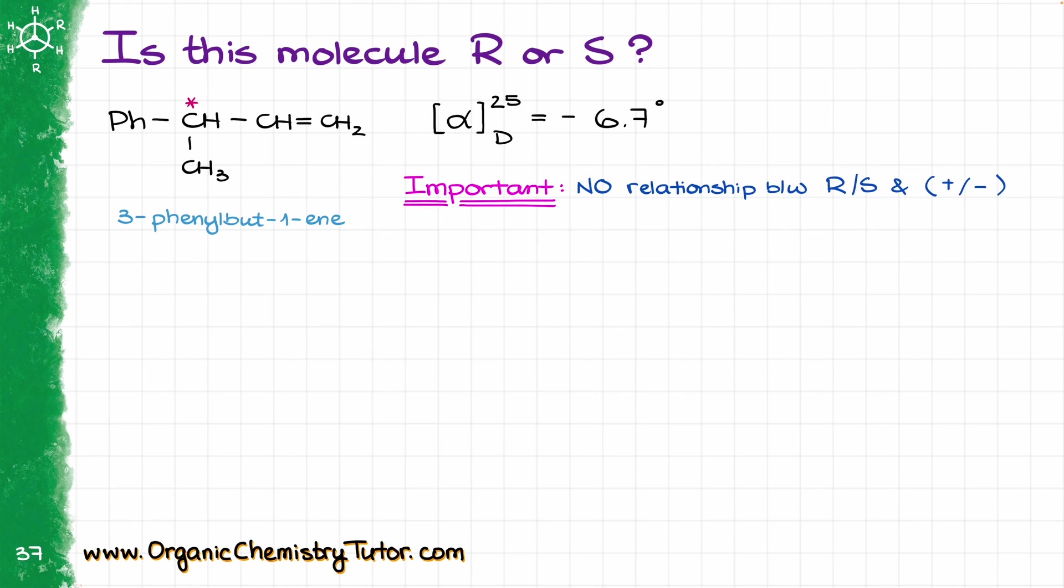And before you jump into a hasty conclusion here, I want to remind you that there is no relationship between our stereodescriptors, between the R and S, and the actual physical property of the optical rotation, which we denote with a plus or a minus, or levo and dextrorotatory molecules.